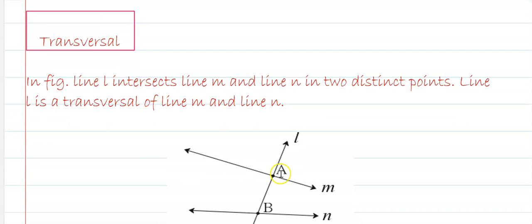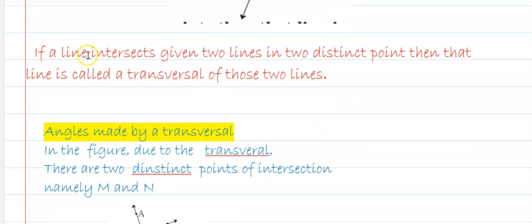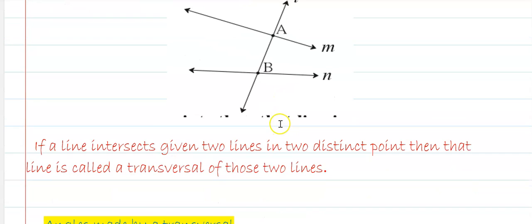Next, the transversal. In the figure, line L intersects lines M and N at two distinct points A and B. Line L is called the transversal of lines M and N. If a line intersects two given lines at two distinct points, then that line is called the transversal of those two lines.